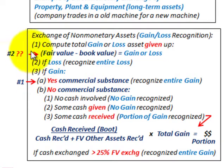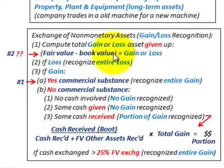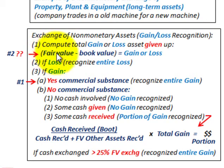We're also going to look at case two, where we go through this equation to determine if there's any gain or loss. You have to know what the fair value is to determine that, along with the book value. In this second case, we're not going to know what the fair value is, so we won't be able to determine any gain or loss.